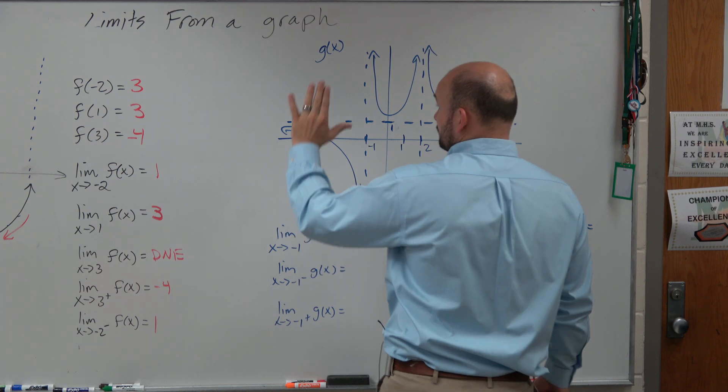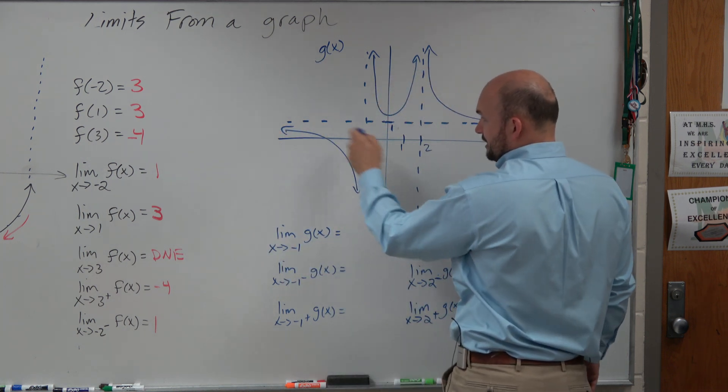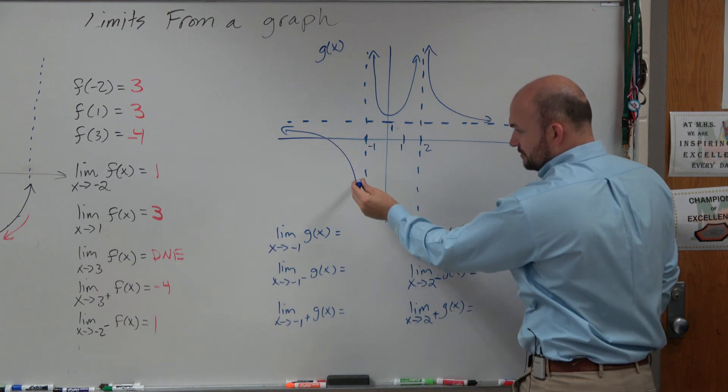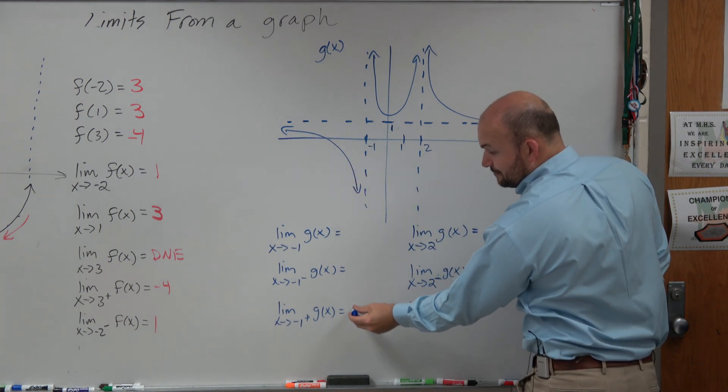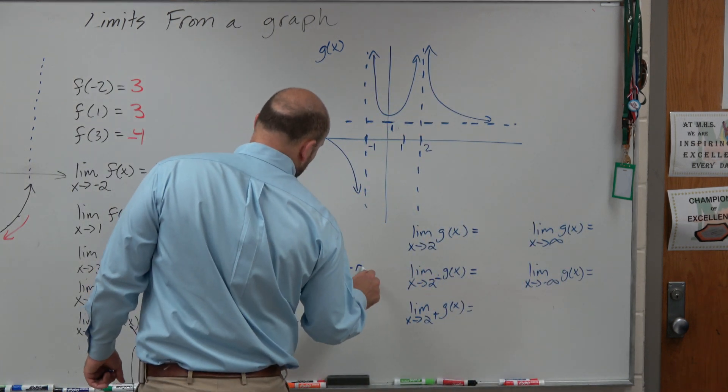So I would call it the left-hand limit. So from the left, kind of put your marker on there, from the left, as we're approaching negative 1, you can see that it's getting really close. It's never going to get through the asymptote, but it's going to get really close, and it's going to keep on going down towards negative infinity.